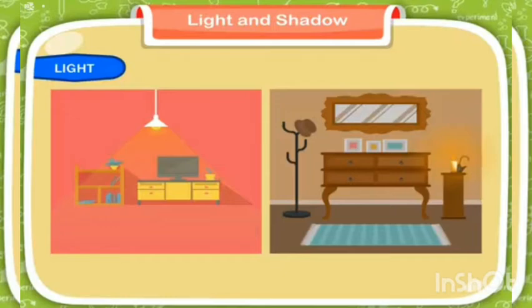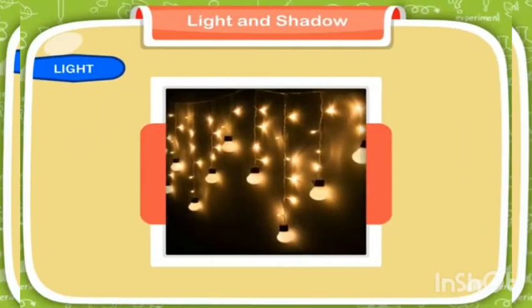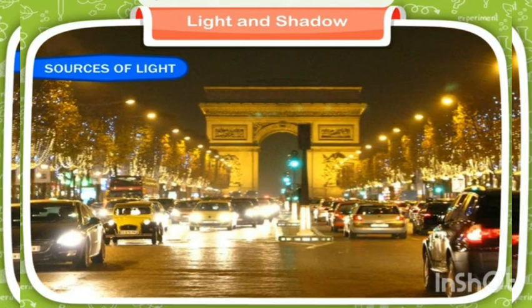objects are visible only because of light. When light falls on any object we can see that object. Therefore, light is very important to us and our environment. Light is a form of energy that enables us to see the objects.